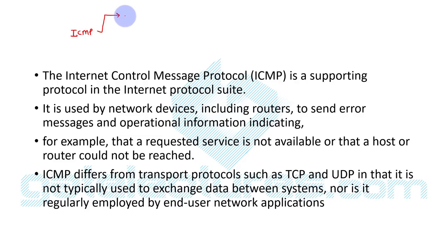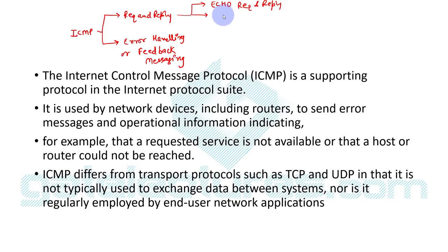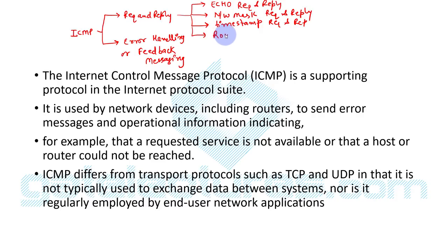ICMP is used in two different ways: number one is request and reply, and number two is error handling and feedback messaging. For request and reply, we use it for: first, echo request and reply; second, network mask request and reply; third, timestamp; and fourth, router solicitation and advertisement.